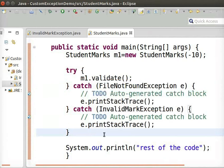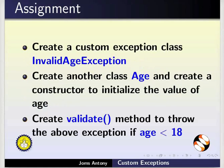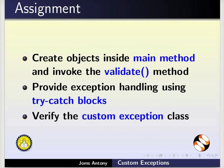With this, we come to the end of this tutorial. Let us summarize. In this tutorial, we have learned about what a custom exception is, the usage of throw and throws keywords, and how to create and use custom exceptions. As an assignment, create a custom exception class called InvalidAgeException, create another class Age with a constructor to initialize the value of age, and create a method Validate that throws an exception if the age is less than 18. Create objects inside the main method, invoke the Validate method, and provide exception handling using try-catch blocks wherever required.